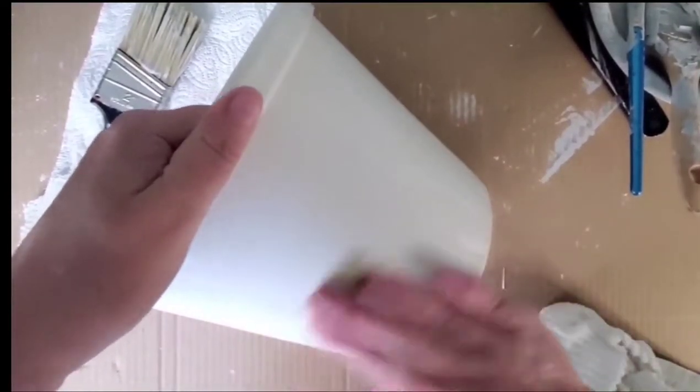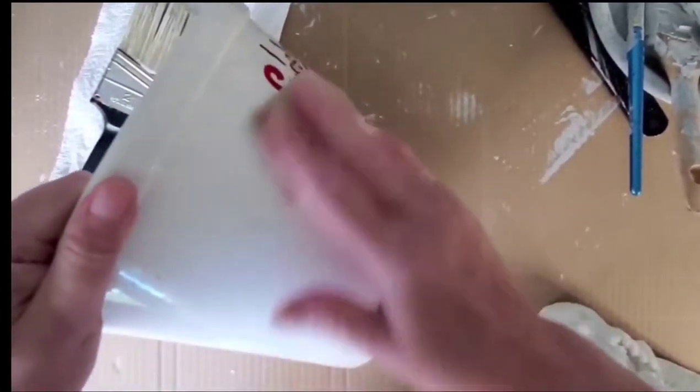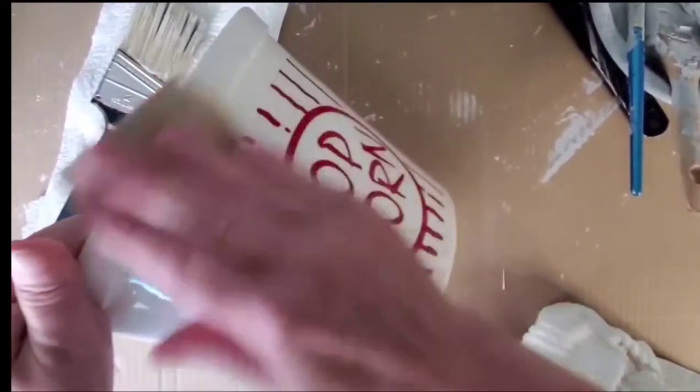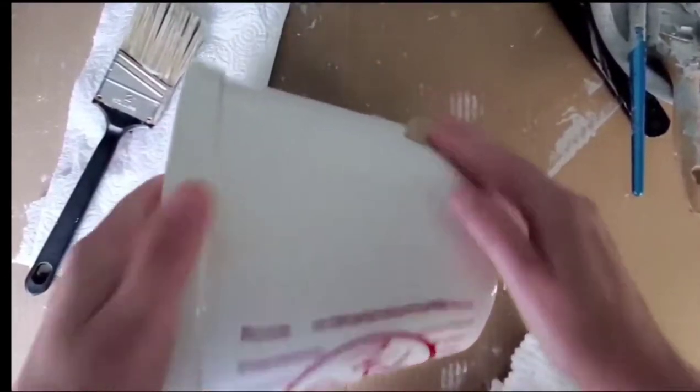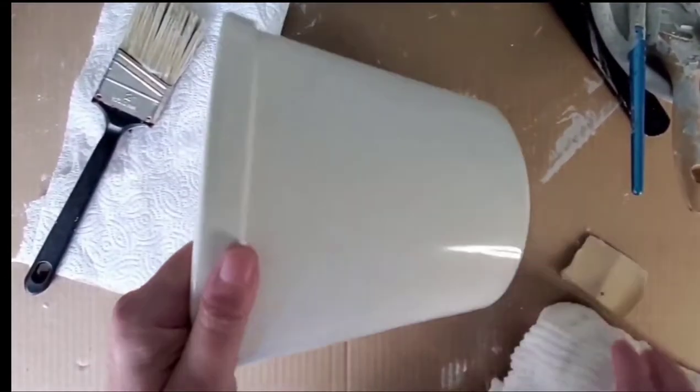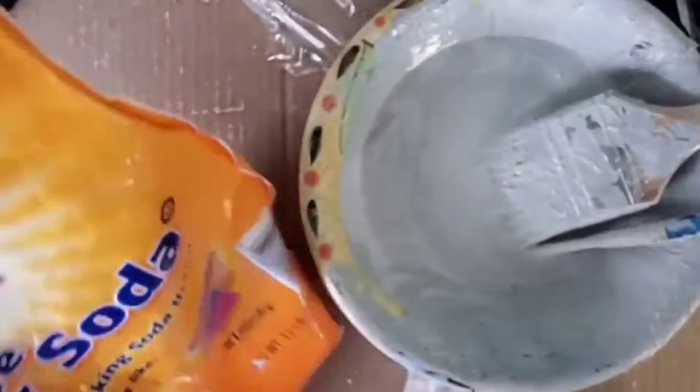I bought it at a yard sale for 50 cents and I want to cover up that finish because I want to turn it into a flower pot. So I'm just taking some sandpaper and we're going to try to get rid of that smooth surface.